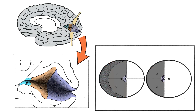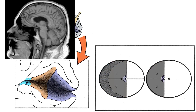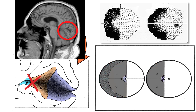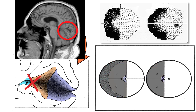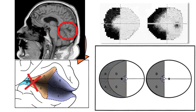A lesion restricted to the anterior 50% of primary visual cortex will spare the central 5 to 10 degrees of the visual field — a phenomenon called macular sparing. Patients tolerate this visual field loss much better than macular splitting, as it allows a more normal reading speed.